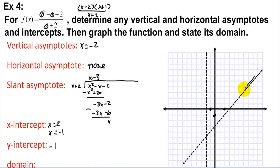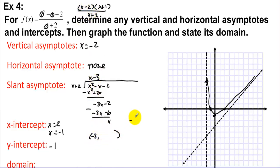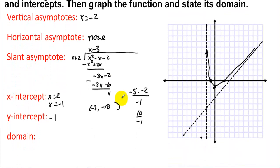On the right side of the vertical asymptote at x = -2, the graph follows the slant asymptote, loops through the x-intercepts at x = 2 and x = -1 and the y-intercept at -1. On the left side, we test x = -3: (-5)(-2) / (-1) = -10. So the point is (-3, -10), which is below the slant asymptote.